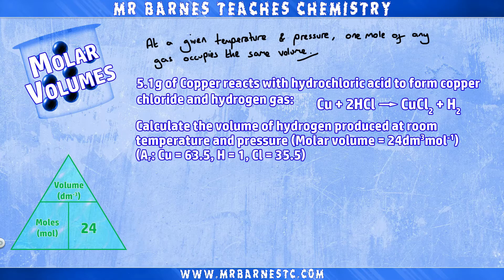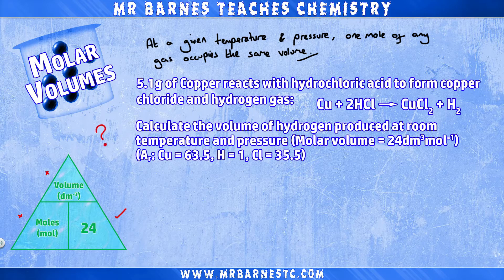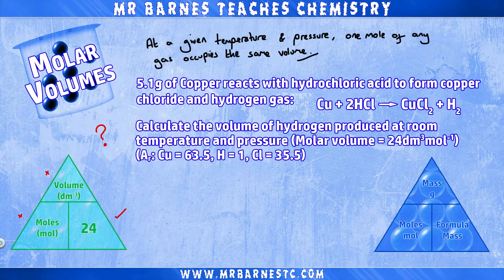For example: I have 5.1 grams of copper reacting with hydrochloric acid to form copper chloride and hydrogen gas. The question says calculate the volume of hydrogen produced at room temperature and pressure, giving you the molar volume and atomic masses of copper, hydrogen and chlorine. From my original triangle I have the molar volume but not the moles or the volume, so I can't use that triangle alone — that's where the moles triangle comes in.